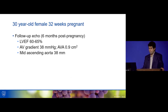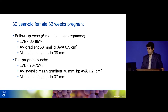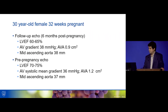On her follow-up echo after pregnancy, LV function was normal, the gradient came down as flow came down, but the aortic valve area was about the same. The mid-ascending aorta was 38 mm — not too dissimilar from the pre-pregnancy values where the gradient was 36 and the mid-ascending was 37 mm. This really speaks to the relationship between flow and pressure gradient.